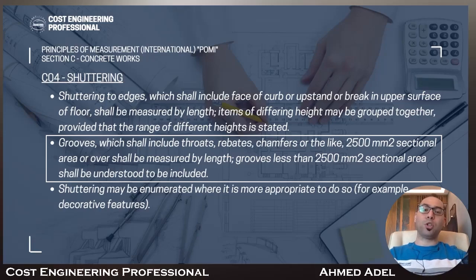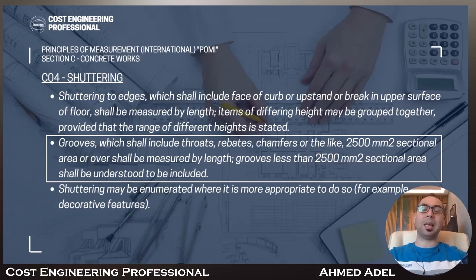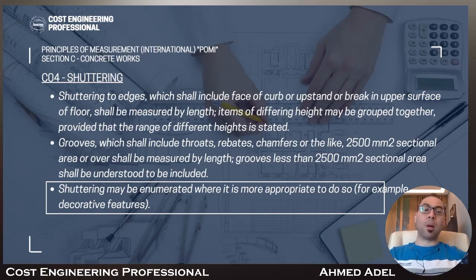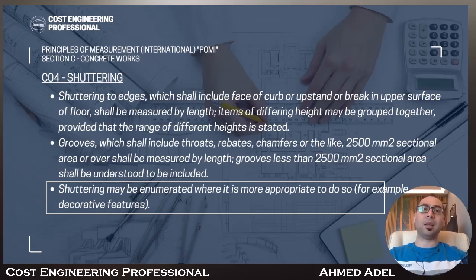Grooves — which shall include throats, rebates, chamfers, or the like — with 2,500 mm² sectional area or over shall be measured by length. So if a groove's sectional area is bigger than 50 mm × 50 mm, the formwork for that groove must be measured by length. Grooves smaller than that are understood to be included in the formwork already calculated. Shuttering may be enumerated where it is more appropriate to do so — for example, decorative features can be measured in numbers, stating description and size.